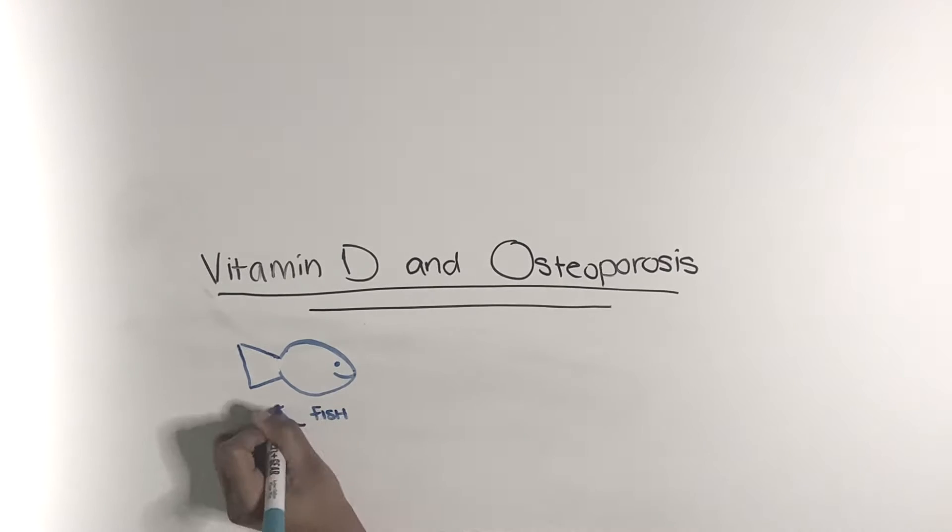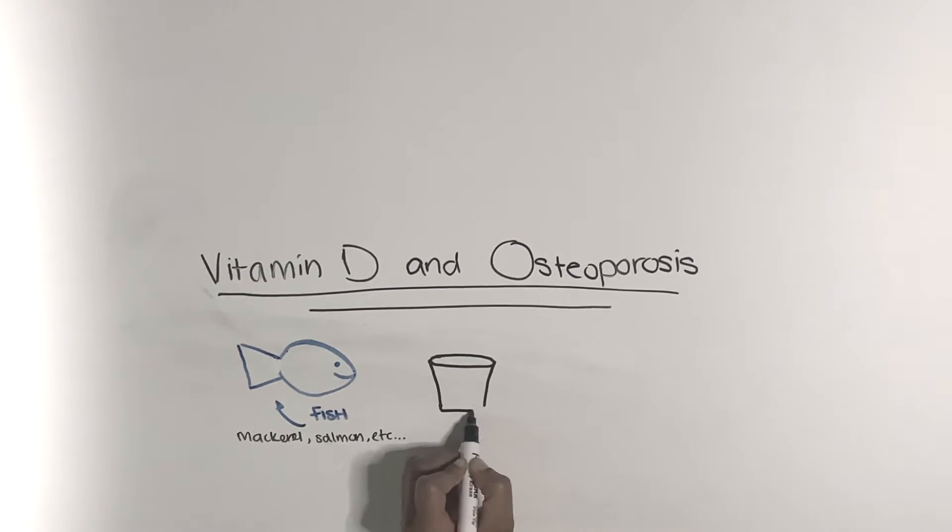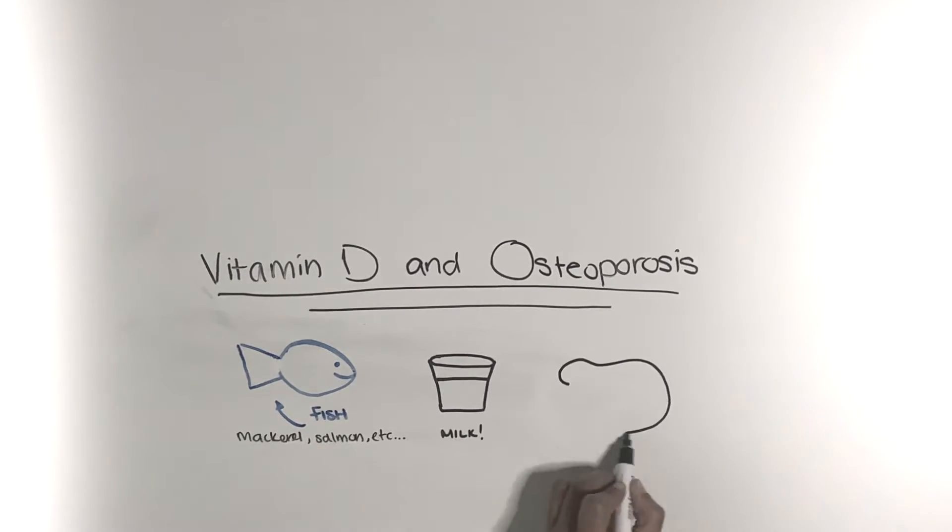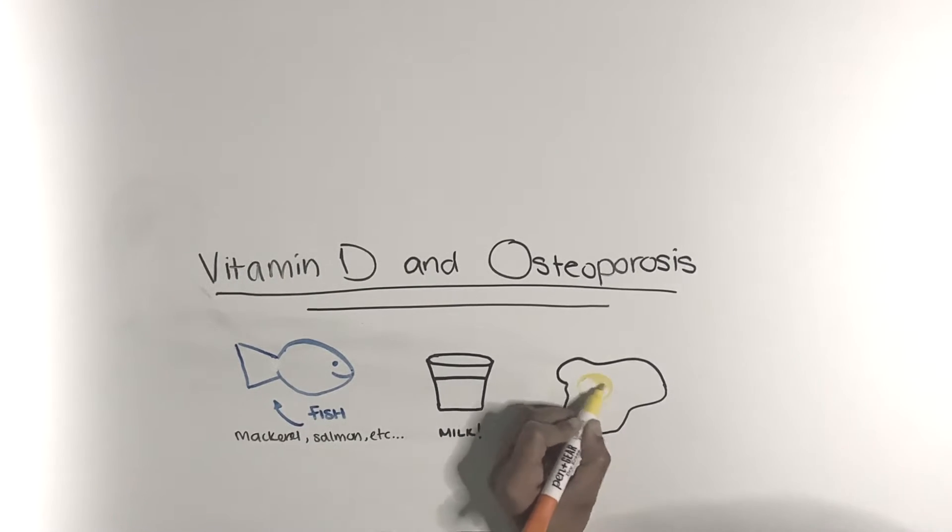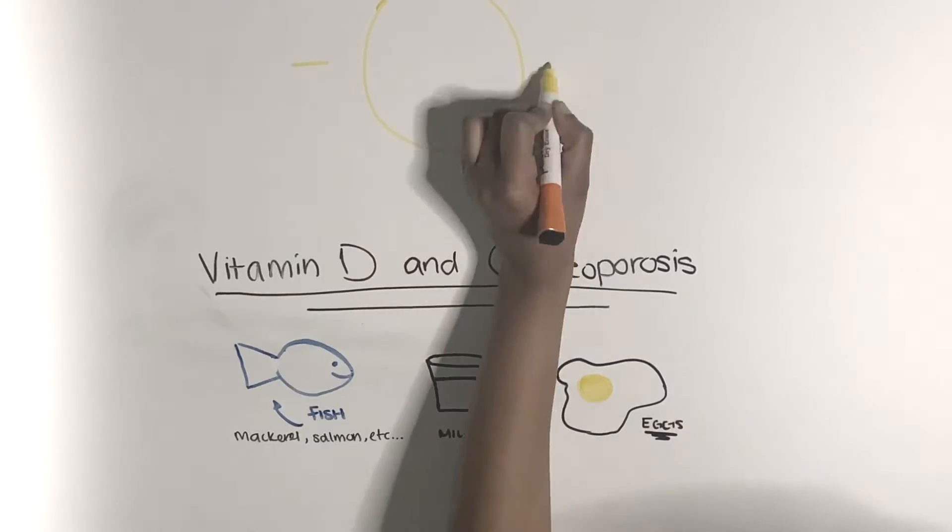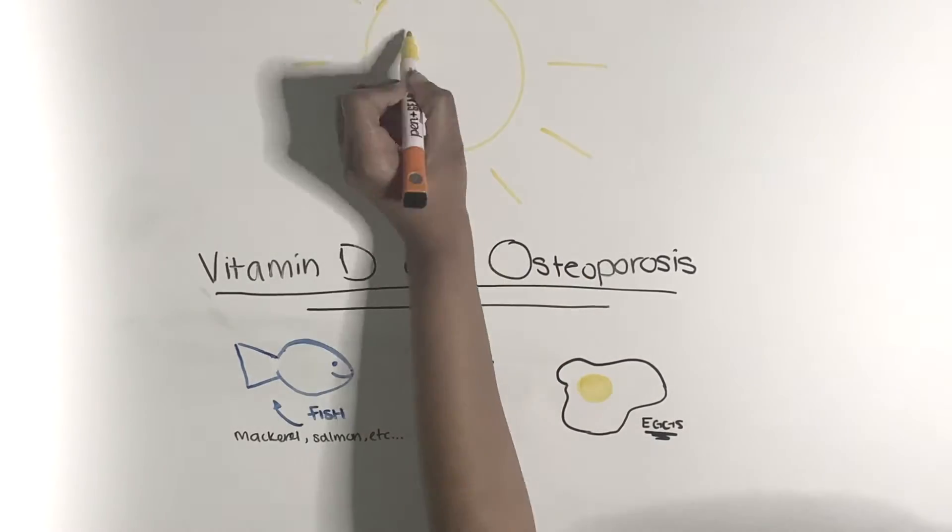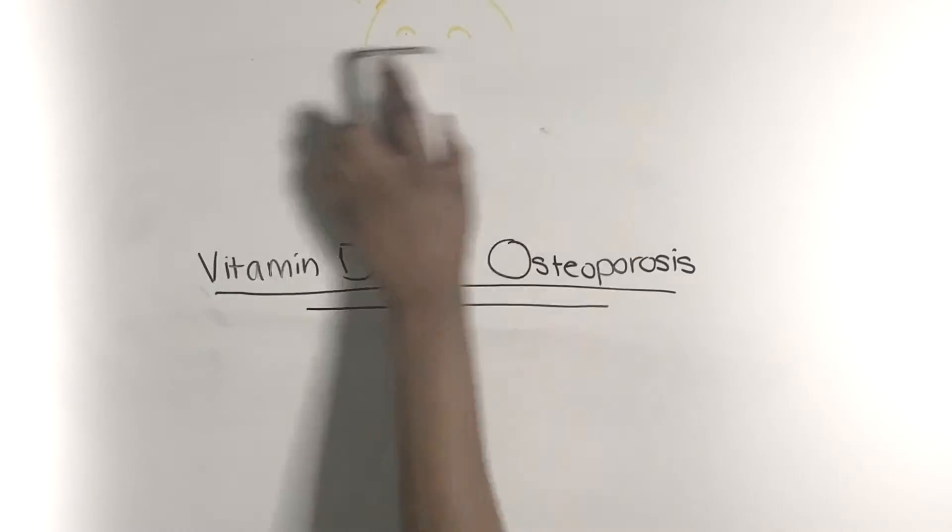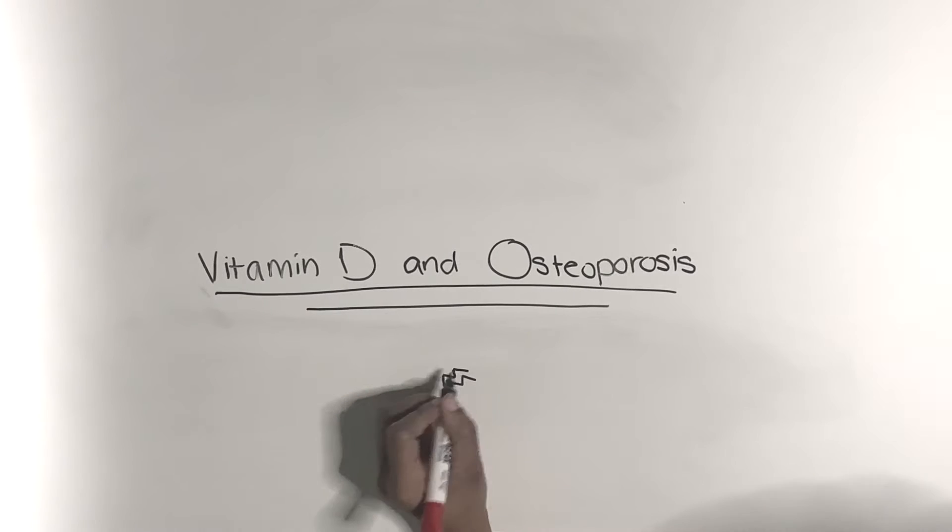A few of the food sources of vitamin D consist of fish such as mackerel and salmon, milk, and eggs. Even though there are a few food sources of vitamin D, the main source is none other than everybody's favorite summertime friend, the sun.